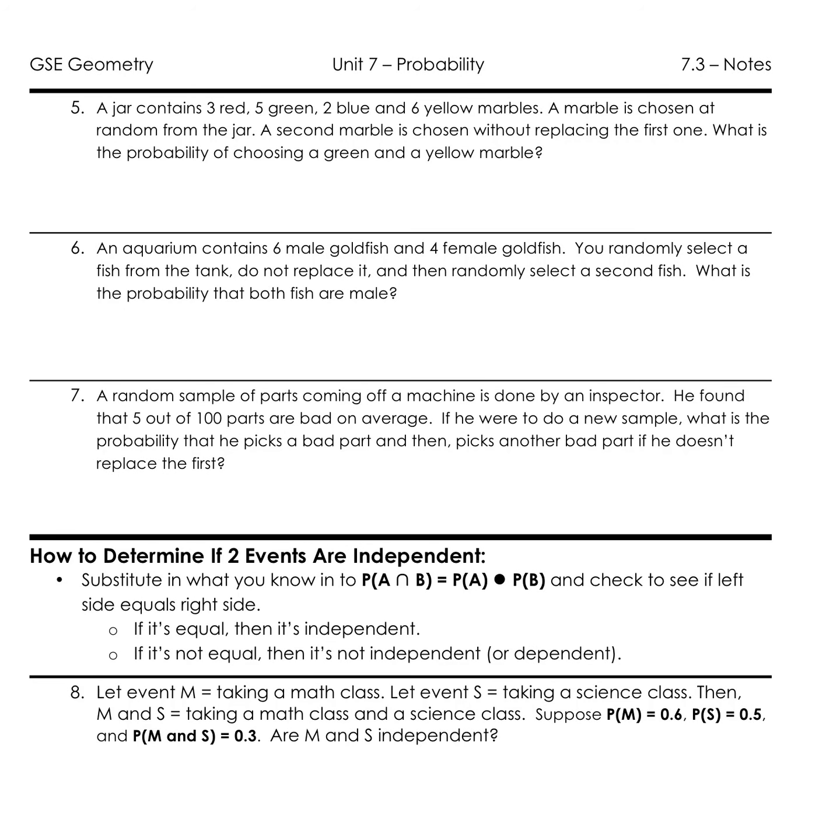So we hit over to page two. Let's look at number six. An aquarium contains six male goldfish and four female goldfish. You randomly select a fish from the tank. You do not replace it. So there it is. There is my keyword. Do not replace it. And then you are randomly selecting a second fish. I don't know if you've ever gone to a fish tank and seen people try to catch them. That might be the most random thing on the planet because those fish are fast and do not want to be hooked in that net.